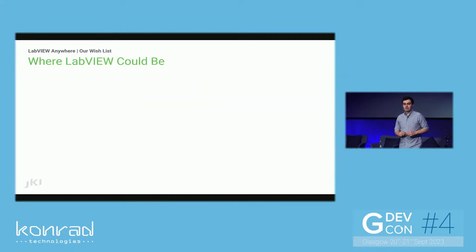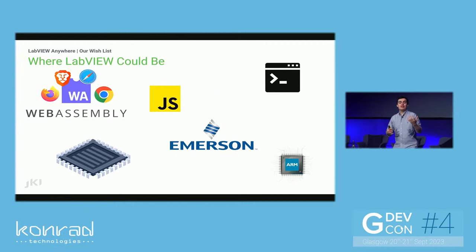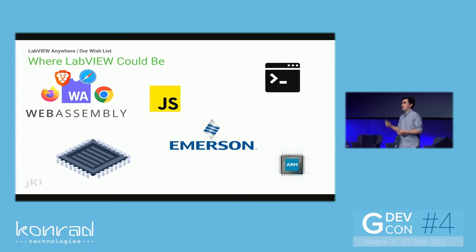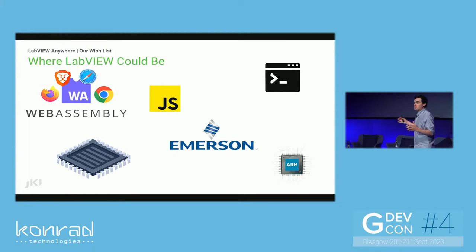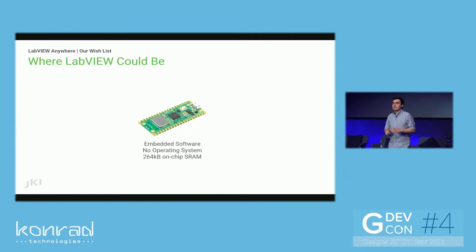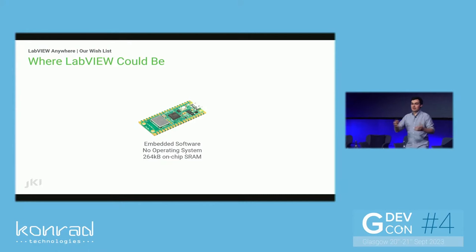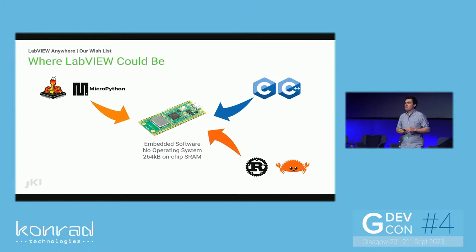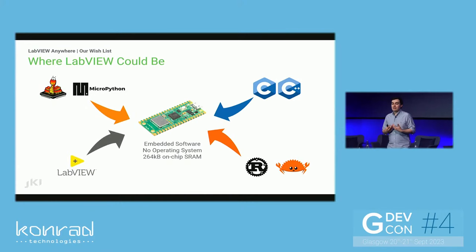So where could LabVIEW be? It'd be great if we could take our G and compile it using WebAssembly to have complex multi-page web applications, or JavaScript for that matter. What about a zero-page application that just runs in the console? ARM processors, Emerson — probably a good shout. And what about something crazy like bare metal programming on microcontrollers with no operating system and limited static RAM? Our friends in MicroPython, C, and Rust can all do this — so why is it difficult for G developers? What would it take?